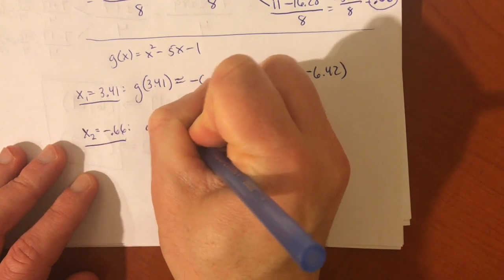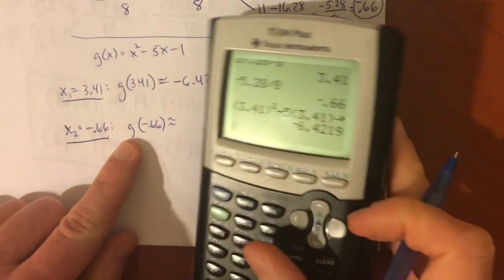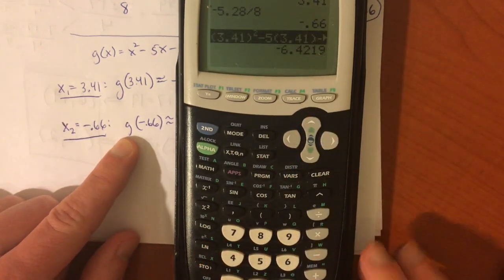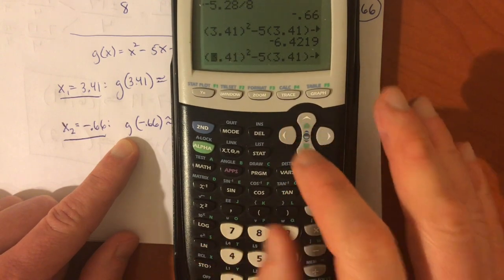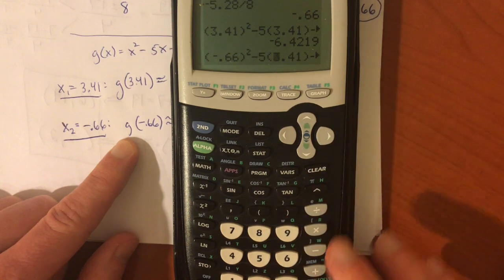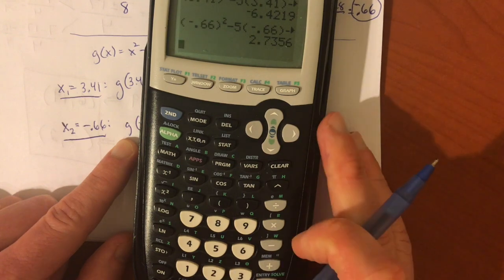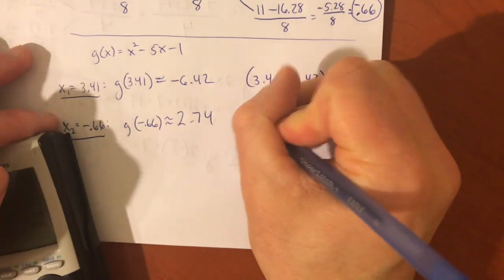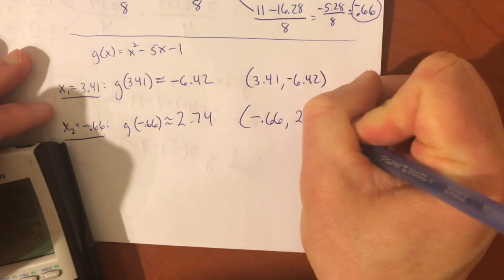Or, f again. It shouldn't matter. Or, if you want to plug it into f and make sure you get the same value that you get from g, that would be one way to check yourself. I'll just bring back the last equation. And, plug in negative 0.66. And, you get about 2.74. So, the other point of intersection is about negative 0.66, 2.74.